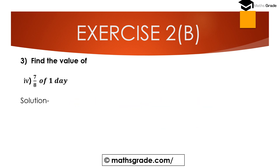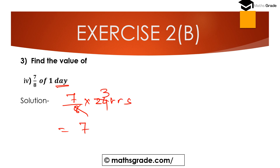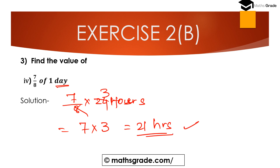Question number 4th part: 7 divided by 8 of 1 day. 1 day is 24 hours. So 7/8 multiplied by 24 hours — 8 goes into 24 three times, so we get 7 multiplied by 3, which is 21. The value of 7/8 of 1 day is 21 hours.